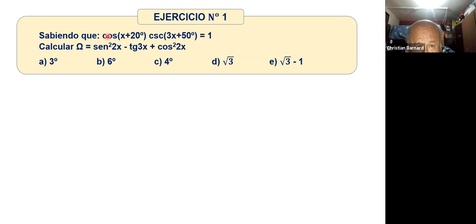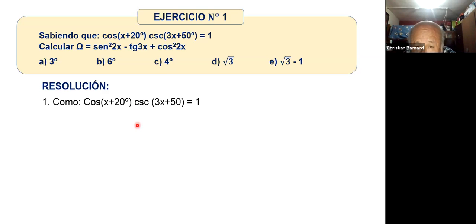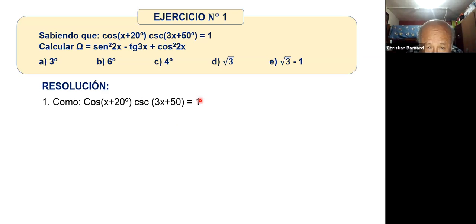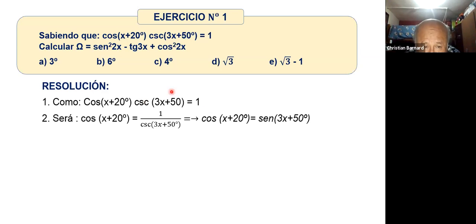Vamos a trabajar para calcular cuánto vale X en esta ecuación. No deben haber dos razones trigonométricas. Entonces agarro la cosecante y la paso a dividir. La transformo al toque: uno sobre cosecante se llama seno. Ahora la ecuación dice que el coseno es igual al seno, entonces estos dos ángulos deben de sumar 90 grados.